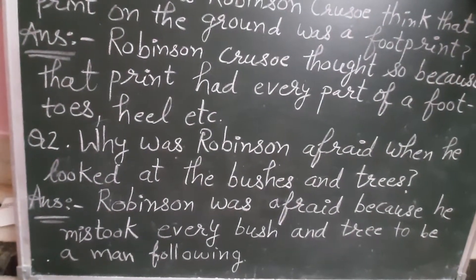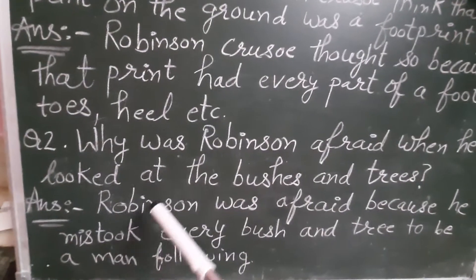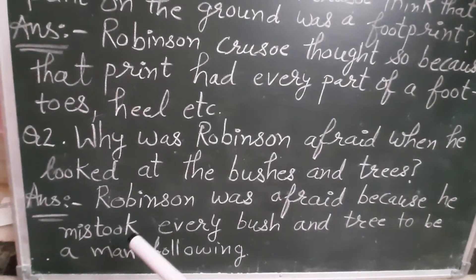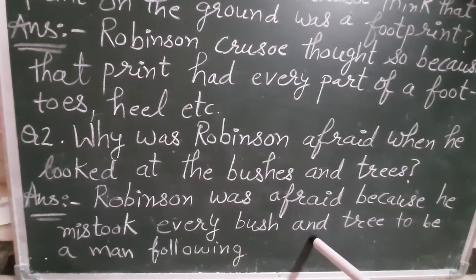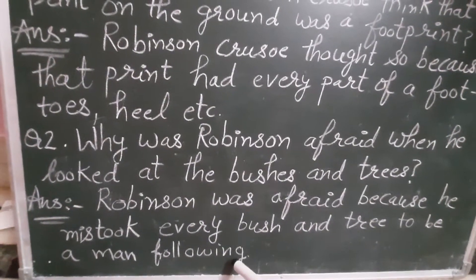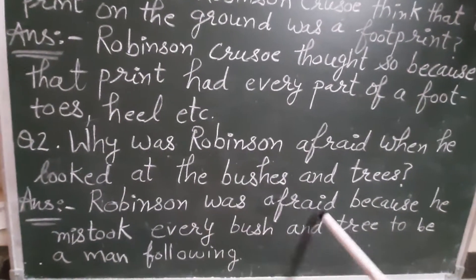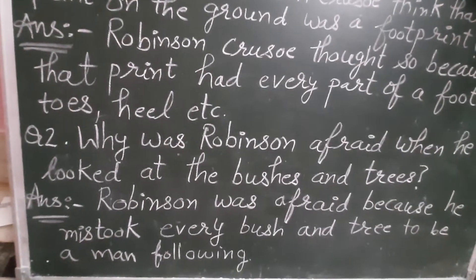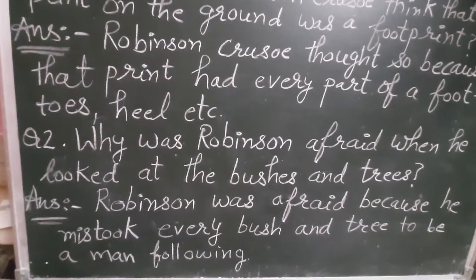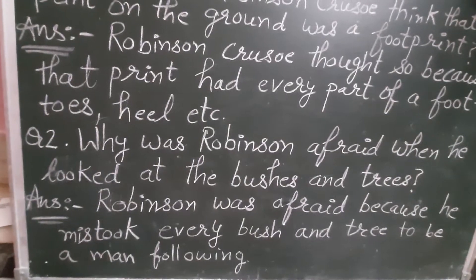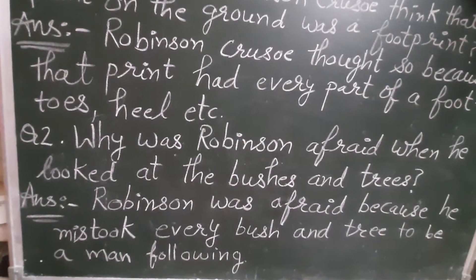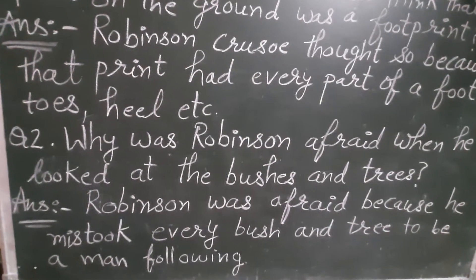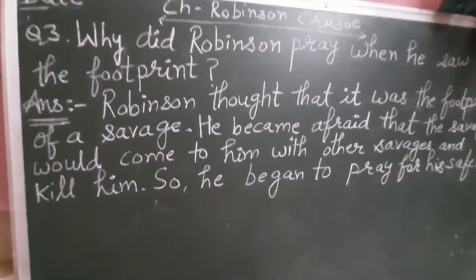Jangli aadmi lagraha tha, savages lagraha tha. Toh wahi answer hai — Robinson was afraid because he mistook every bush and tree to be a man following him. Woh galat samajh raha tha kyunki woh dara hua tha, aur isliye usko lagraha tha ki jo bushes hain aur jo jhaadiyaan hain, ped wagerah bhi savages lagraha tha, jangli aadmi lagraha tha.